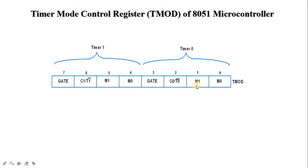Four modes are available: mode 0, mode 1, mode 2, and mode 3. When M1=0 and M0=0, mode 0 is selected. When M1=0 and M0=1, mode 1 is selected. When M1=1 and M0=0, mode 2 is selected. When M1=1 and M0=1, mode 3 is selected.